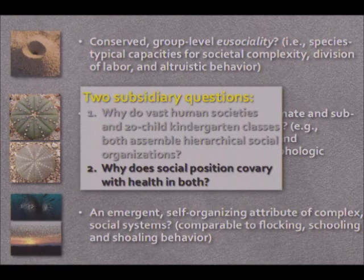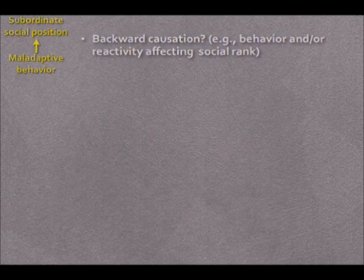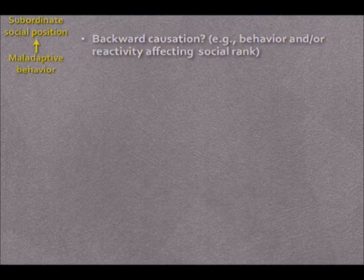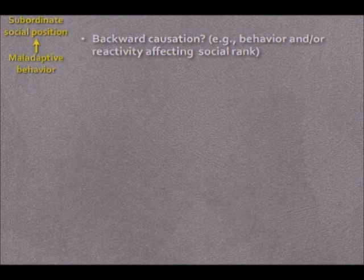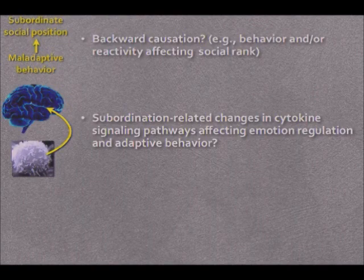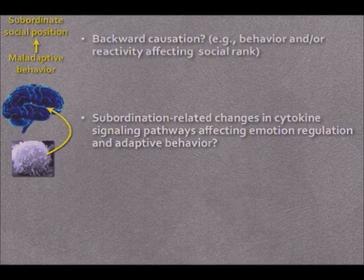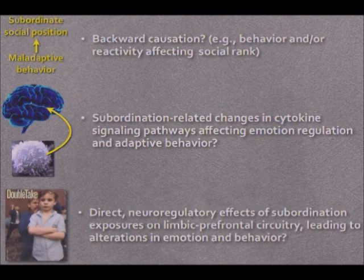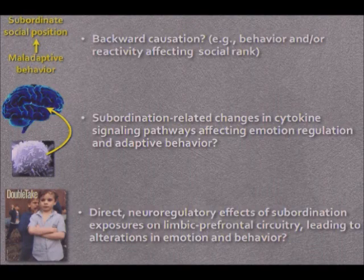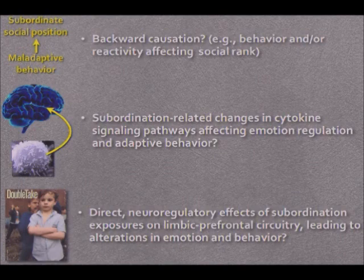With respect to the second subsidiary question — why does social position co-vary with health in both circumstances — one possibility is backward causation, in which behavior or reactivity affects social rank rather than the other way around. A second is that subordination-related changes in cytokine signaling pathways somehow affect emotion regulation and adaptation within brain circuitry. A third would be direct neuroregulatory effects of subordination exposures on limbic prefrontal circuitry leading to alterations in emotion and behavior.